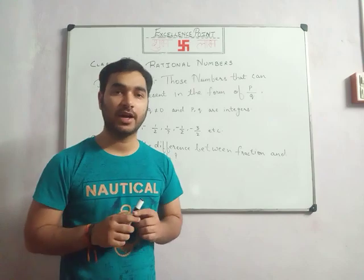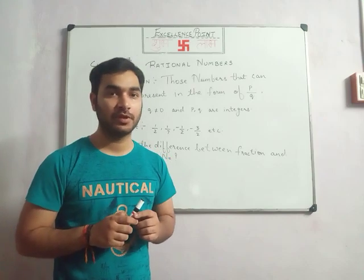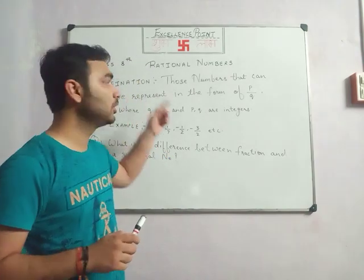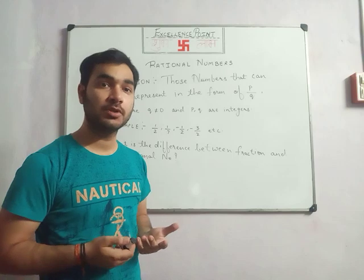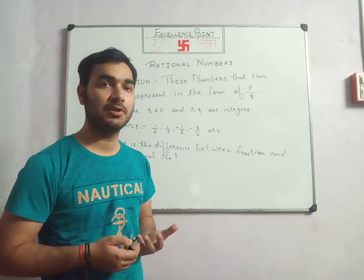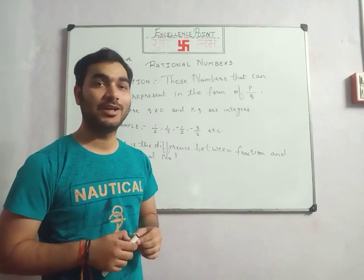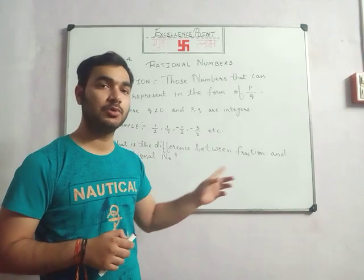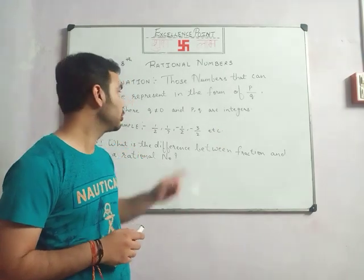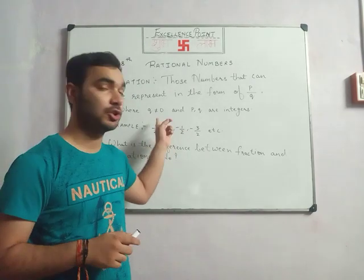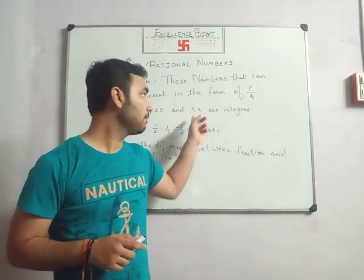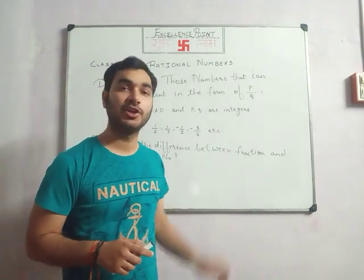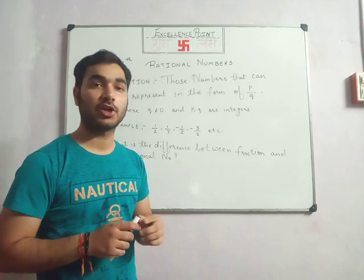Starting with the definition: rational numbers are those numbers which can be represented in the form of P by Q, where Q is not equal to zero and P and Q are integers.